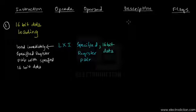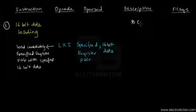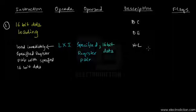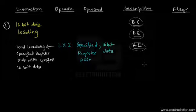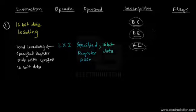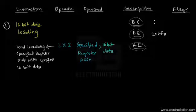Let's have an example. First you need to know how many register pairs there are. For the general purpose registers, we can treat the B and C registers together as a pair, then D and E registers together as a pair, and similarly, we can treat HL registers as a pair. So we can have three register pairs in all. The syntax goes somewhat this way — if we want to load the 16-bit data of 20FFH into the BC register pair.